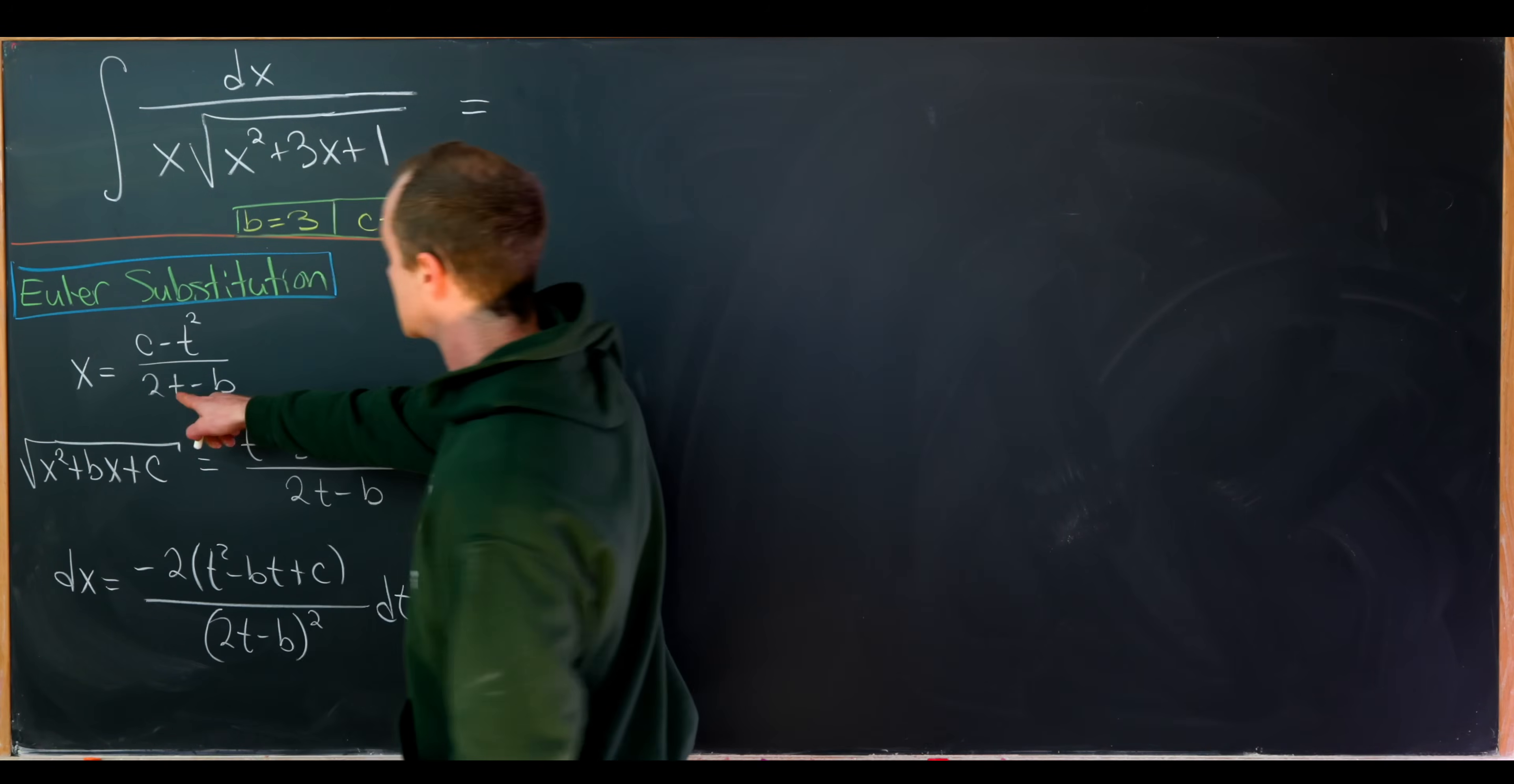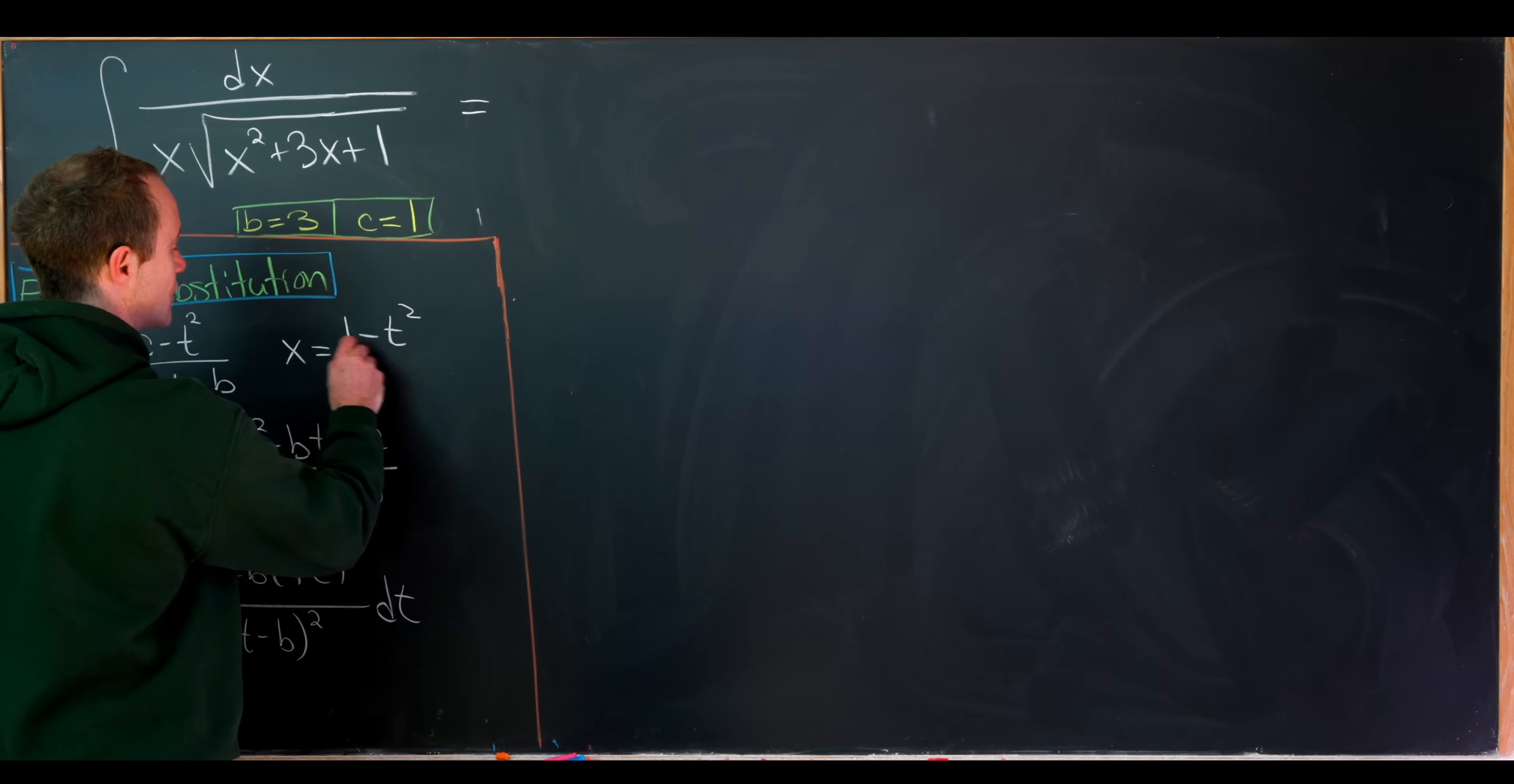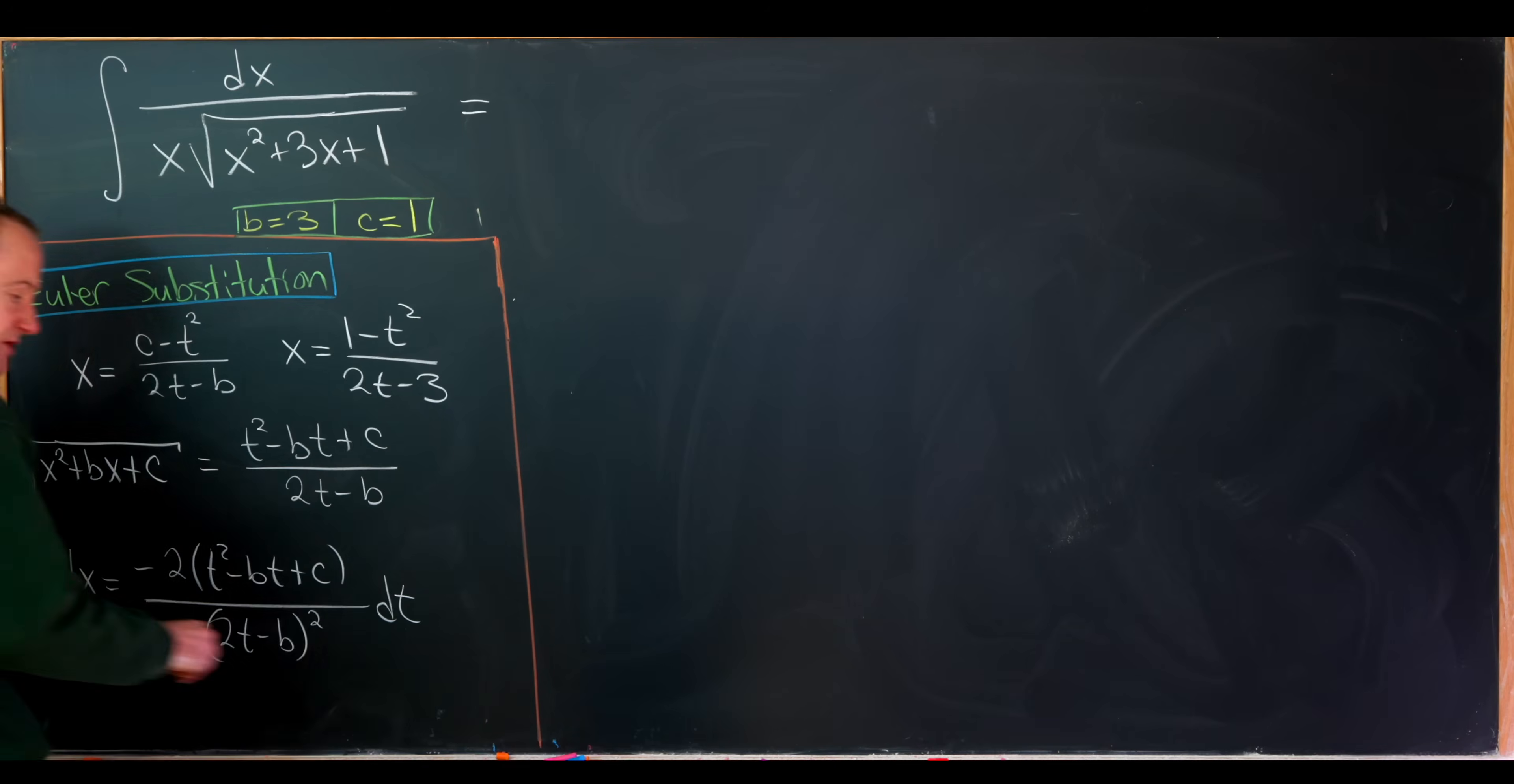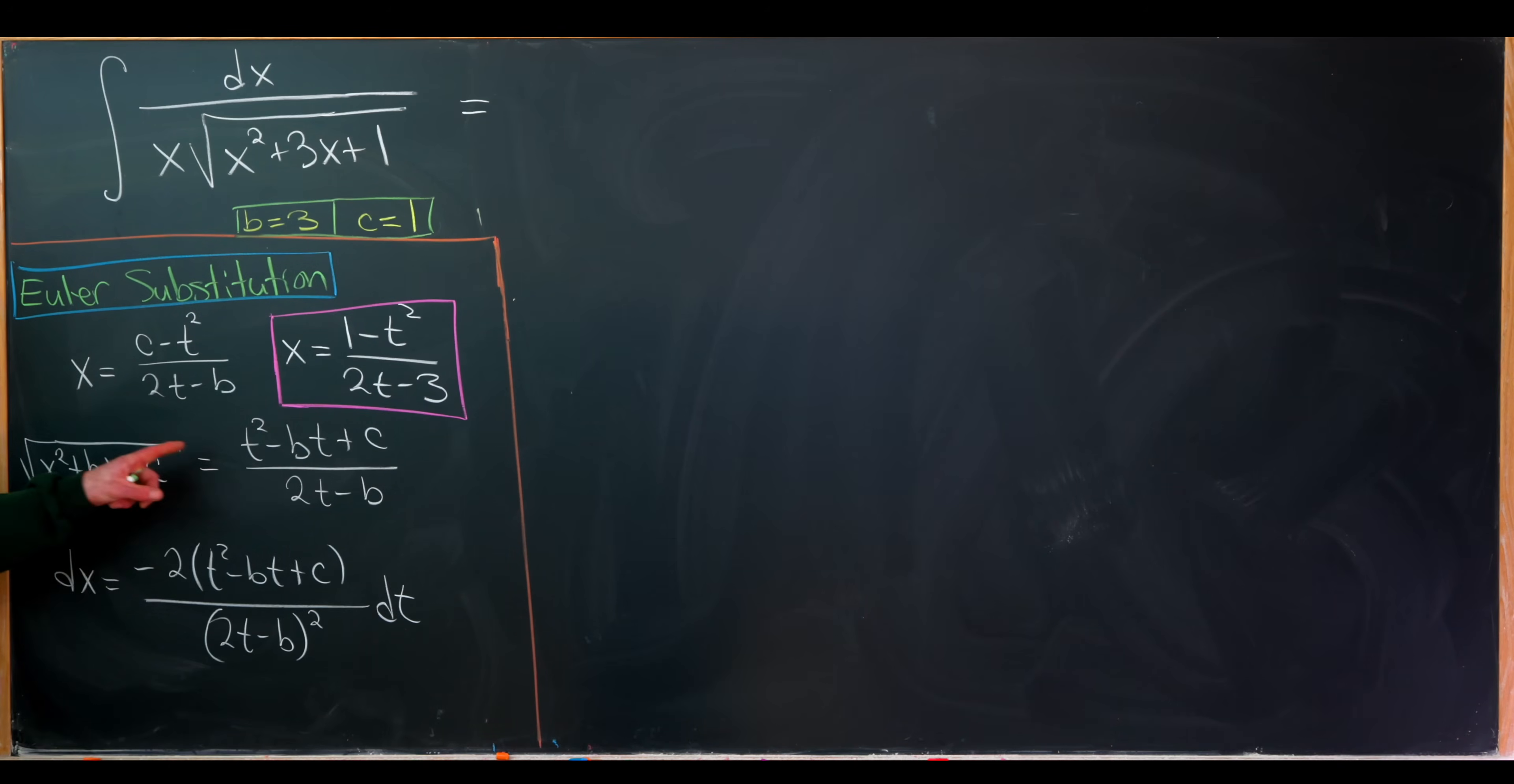So that's what we'll keep in mind as we do this calculation. Okay, so let's just note that we will take x, in this case, to be 1 minus t squared over, so we'll have 2t minus 3. So that's our substitution in this setting. And then after making that substitution for x, we will populate the rest of these parts.